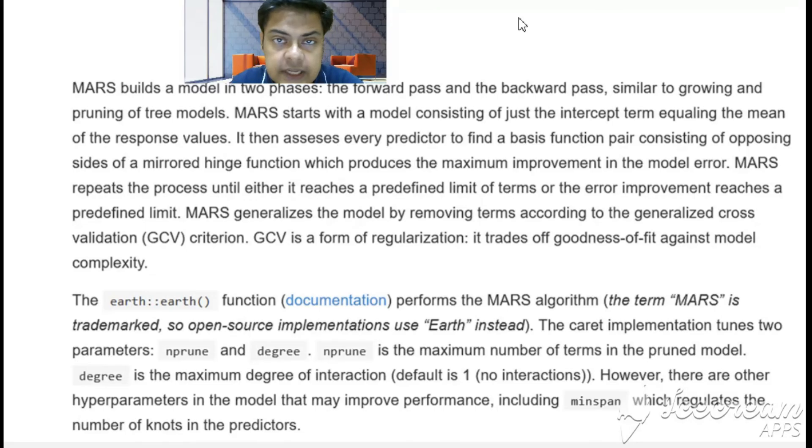The maximum degree of interaction—the default is 1 for no interactions, but the maximum number is more than that. In my experience it's closer to 20, sometimes it goes as far as 20 as well. However, there are other hyperparameters in the model that may improve performance, including minspan which regulates the number of knots of the predictors.